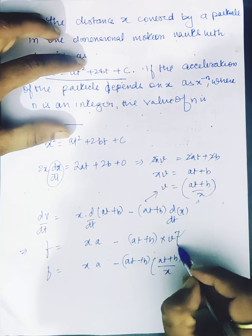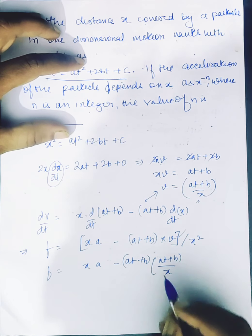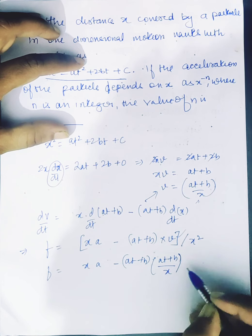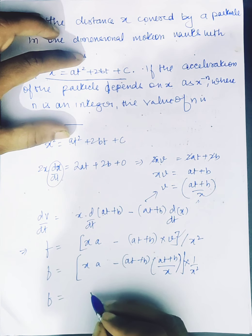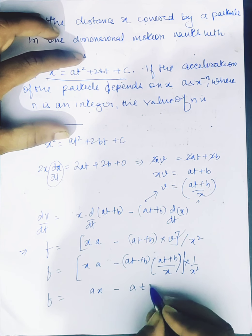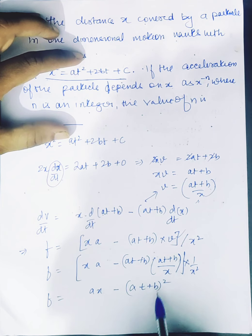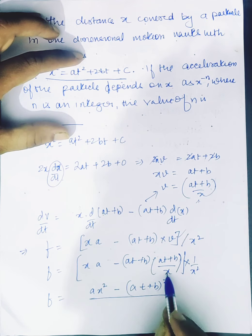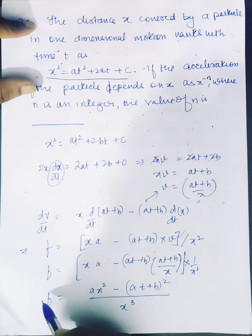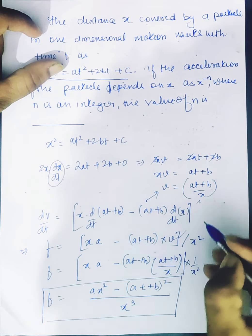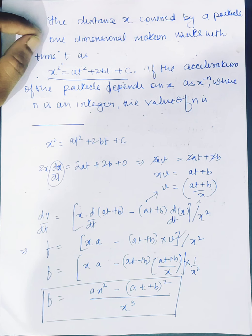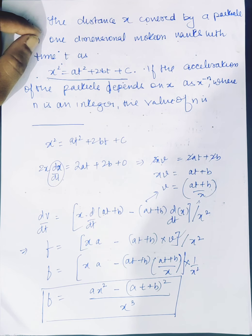We now have a factor of 1/x squared overall. So acceleration f equals ax minus (at plus b) squared divided by x, all over x squared, which simplifies to ax squared minus (at plus b) squared, divided by x cubed. The numerator is ax squared minus (at plus b) squared.